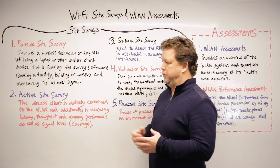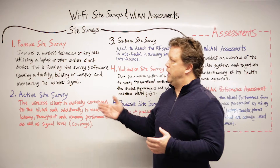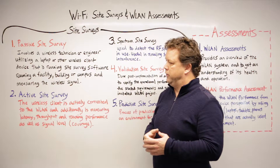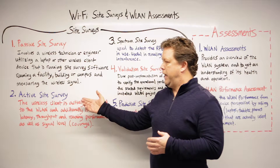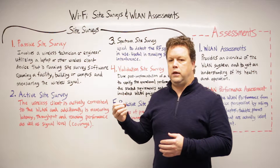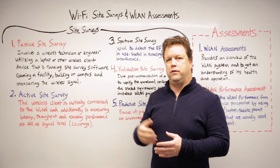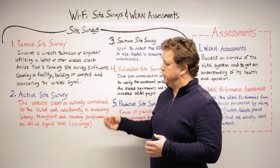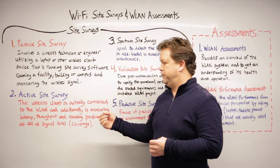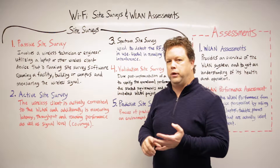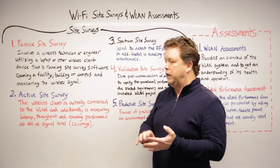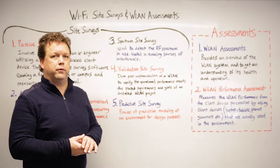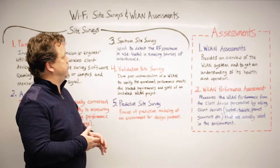The second type of survey is an active site survey. This is in opposition to passive. It's similar to the passive site survey, but in this active site survey, the device is actively connected to the wireless LAN system. And while it's measuring the signal, it's also doing some other performance testing — testing throughput, latency, and even roaming performance.